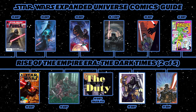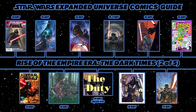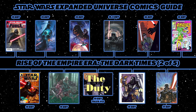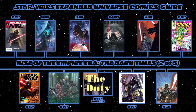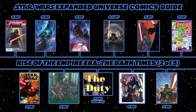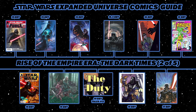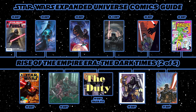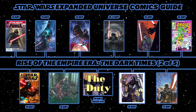Then the third Darth Vader miniseries: Darth Vader and the Ninth Assassin, where Vader takes down eight assassins hired to murder him and now seeks the ninth — the one who hired them all. Then the Hyperspace web strips Evasive Action: Prey and Evasive Action: Endgame. Then the final Darth Vader miniseries: Darth Vader and the Cry of Shadows, following a bitter clone trooper left for dead who decides to follow Vader.